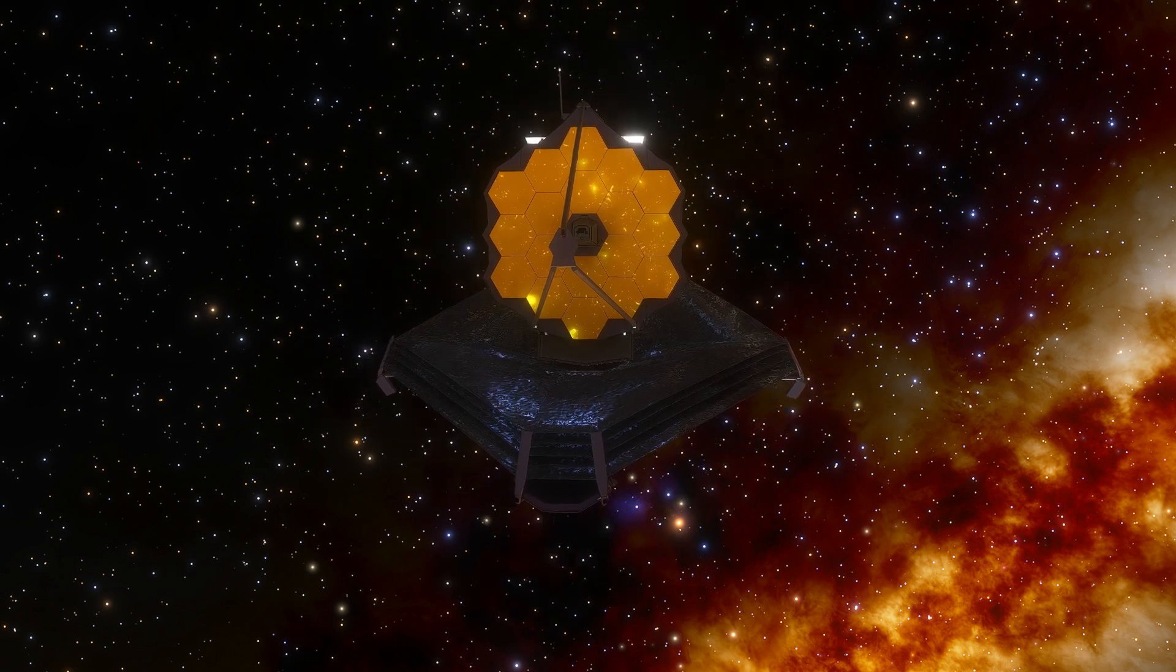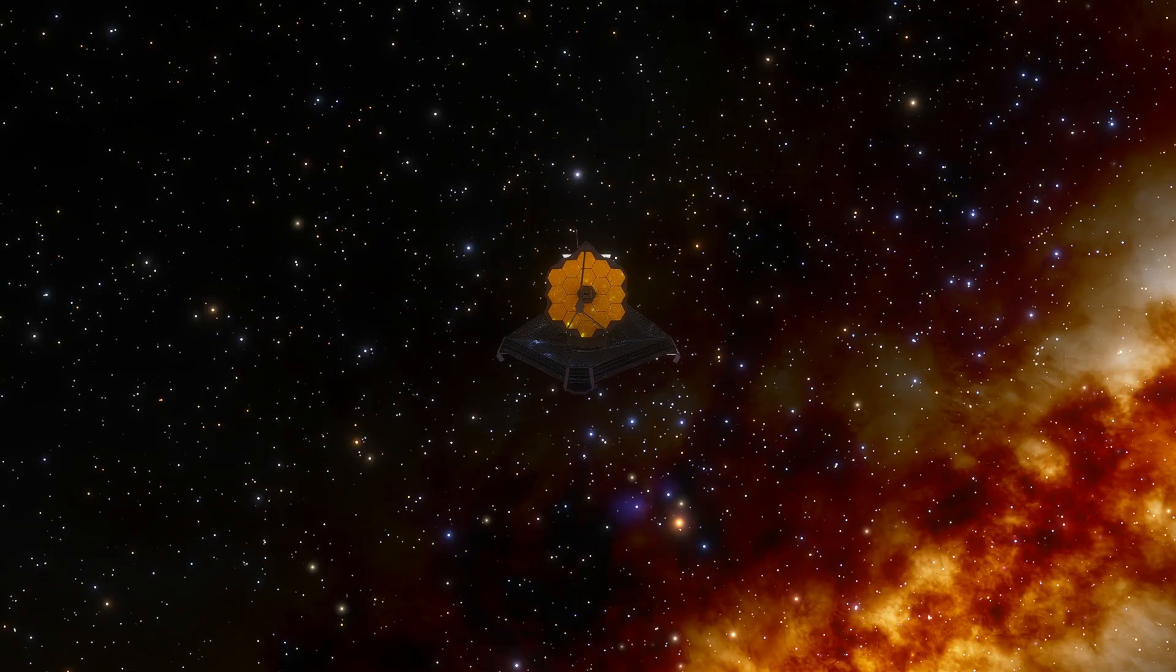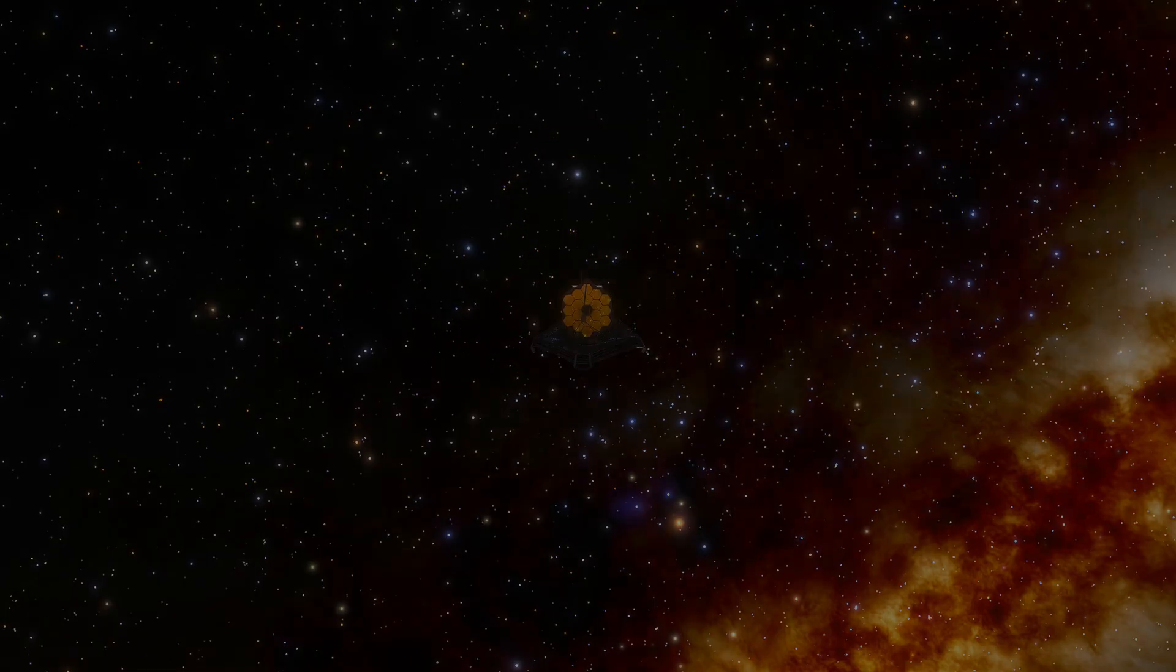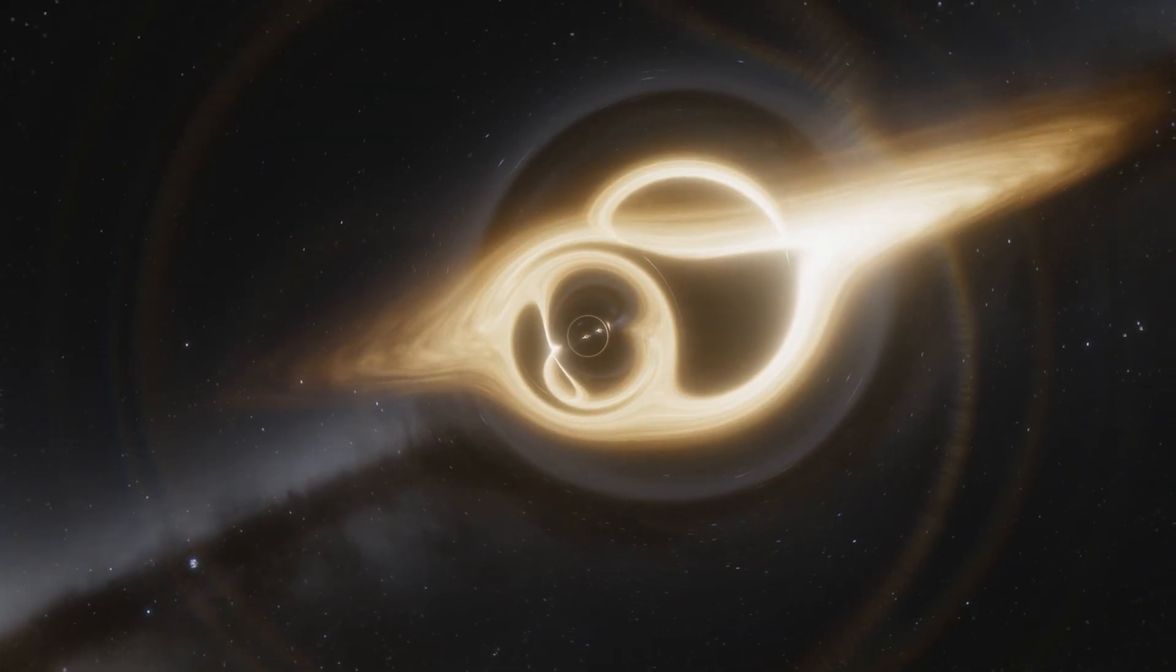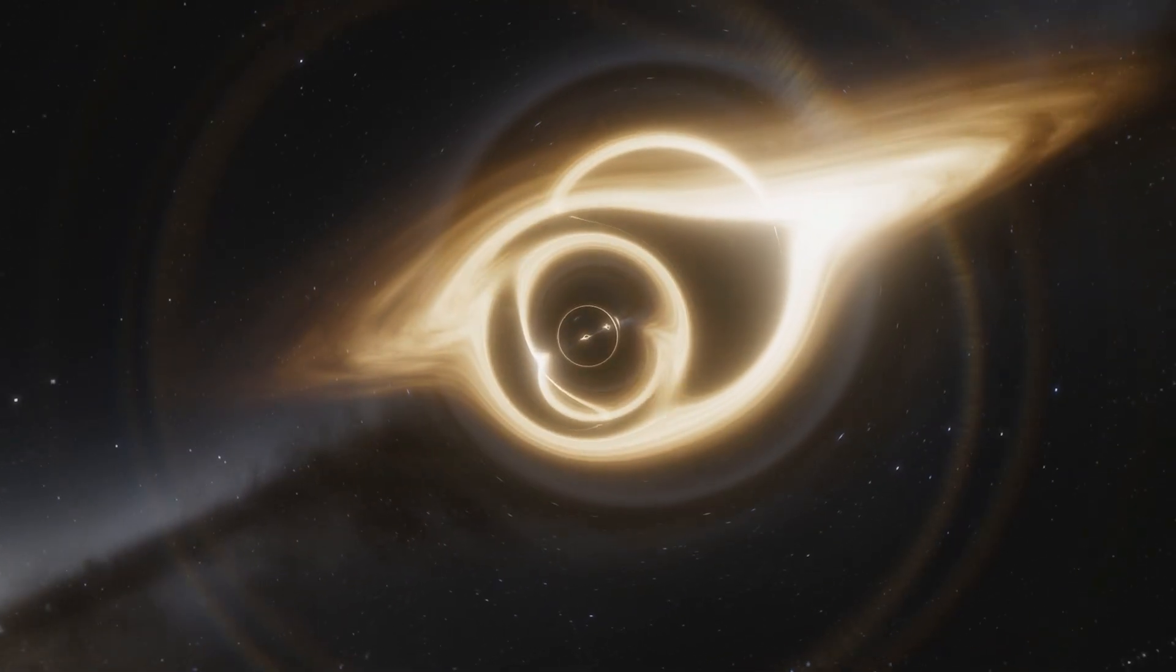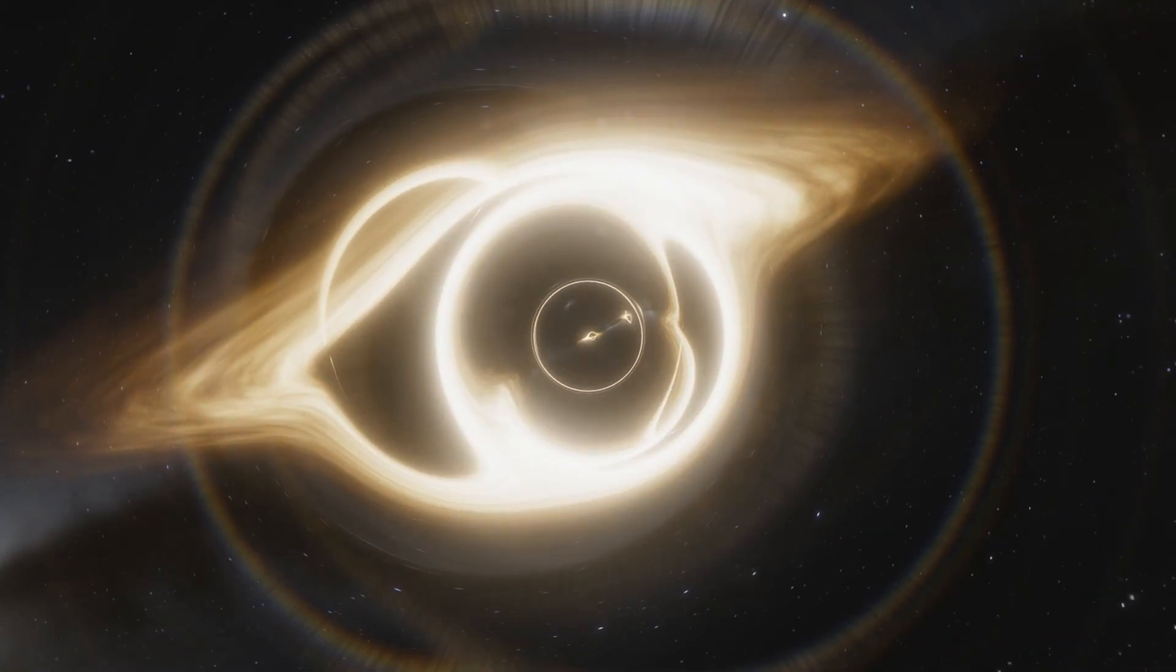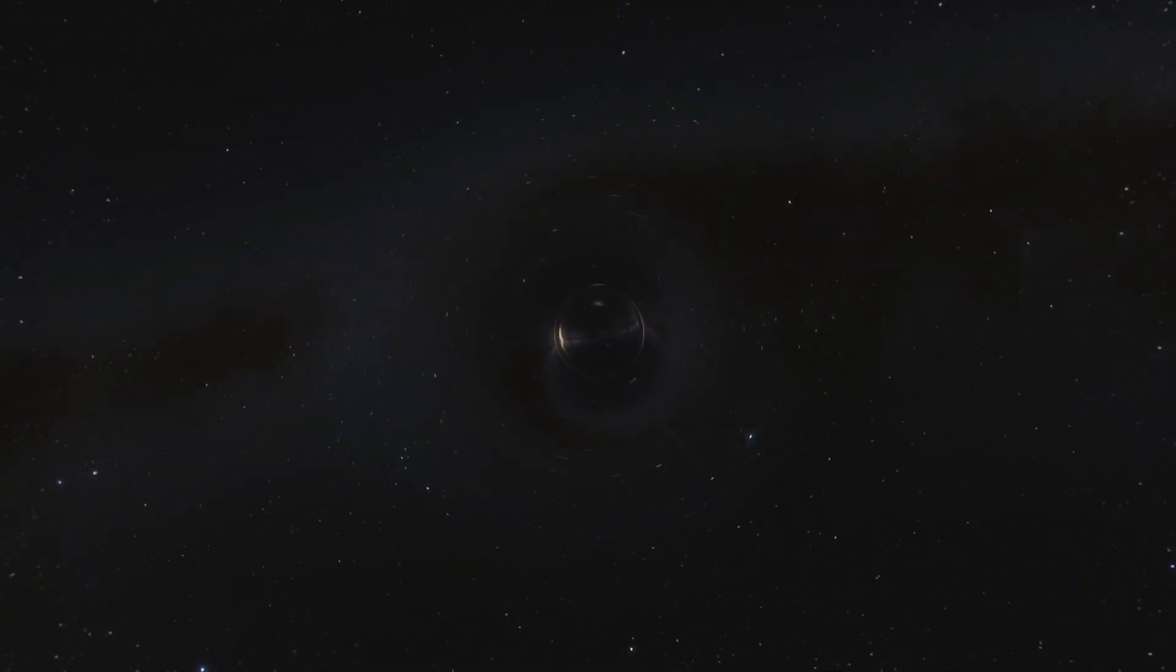As if impossibly ancient galaxies weren't shocking enough, James Webb uncovered something even stranger lurking within them. Black holes. Not the small ones born from collapsing stars, but supermassive black holes. Millions, sometimes billions of times heavier than the sun. And they weren't supposed to be there.